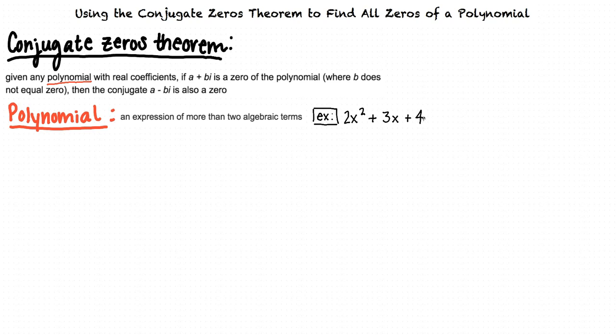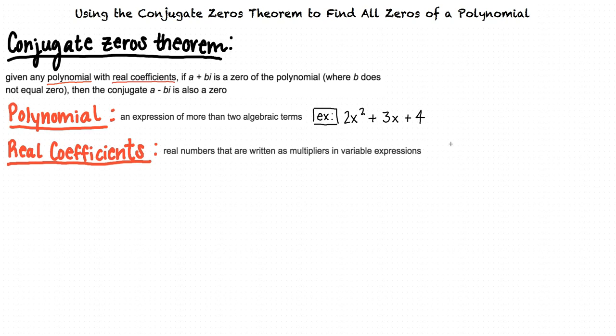Second, let's define the term real coefficients. Real coefficients are real numbers that are written as multipliers in variable expressions. For example, in the expression 3x, 3 is the real coefficient.